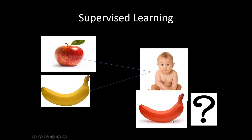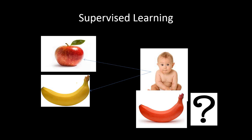Now, we showed the baby a third picture which is not circular and not yellow either, and asked the baby to categorize it into either apple or banana. What the baby learned in the first case, it is going to use that learning to categorize the new picture. This is called supervised learning, in which we have labeled the pictures into two categories. The baby knows beforehand what is a banana and what is an apple, so the moment you show a banana, it is able to categorize that into the banana category.